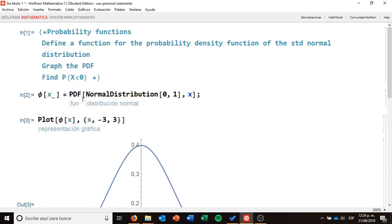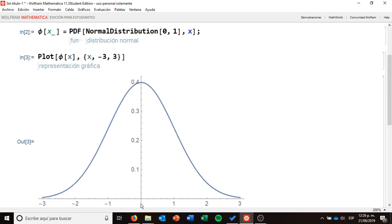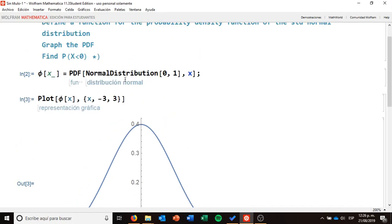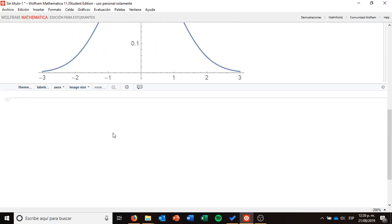Now the last question is to find the probability of x to be less than zero. We obviously know that because of the symmetry of the normal distribution, the answer is one half. However, let's do it with two different ways. The first one using integrals and the second one using another function from Mathematica called CDF, the cumulative density function. So let's do it.